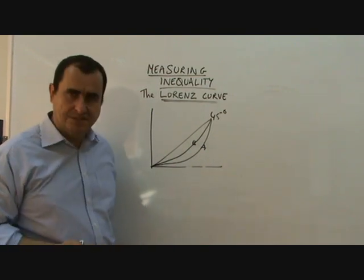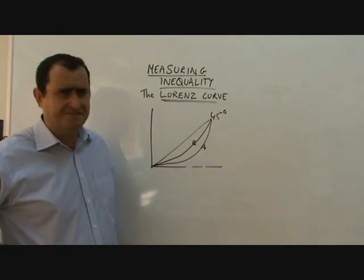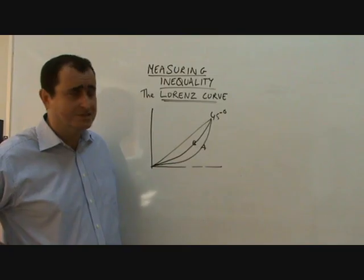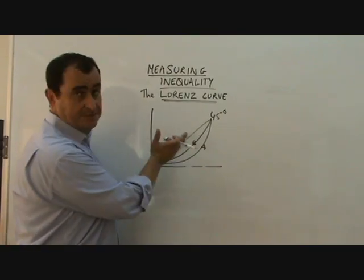The recent political scandal over the cutting of the 10p income tax rate, which has left, I think, 5.2 million people worse off in the UK, could be argued to throw the Lorenz curve out of it.